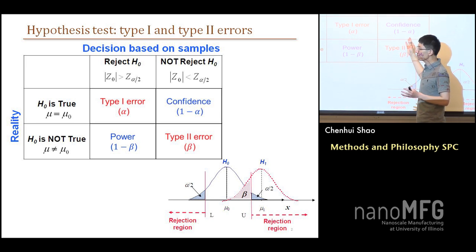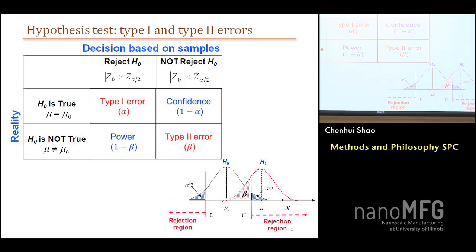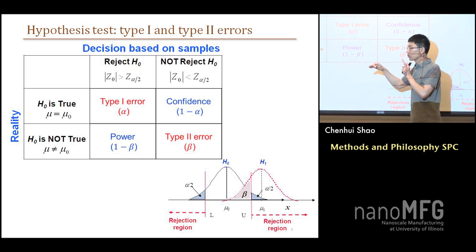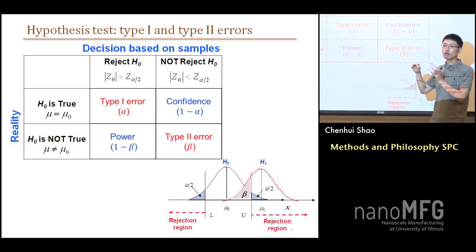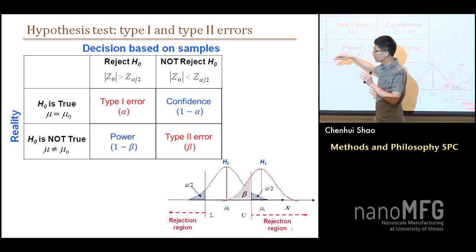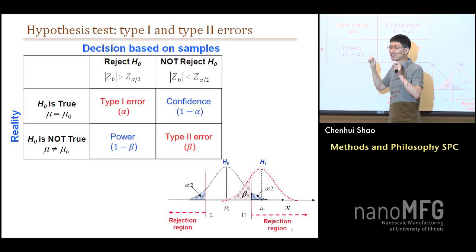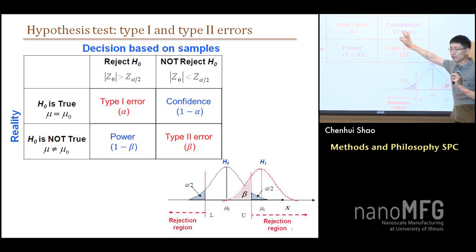Second category: H-null is actually false. We are having something wrong, but our data tells us nothing is wrong — that's a different type of error called Type 2 error or beta error. Beta error means that when the ground truth is actually abnormal but you say it's normal, that's Type 2 error. Conversely, when H-null is not true and we use our test to reject H-null, we have detection power, which is one minus beta. Type 1 and Type 2 error are among the most important concepts in this class.